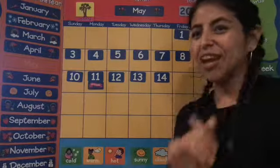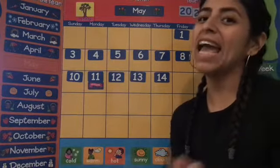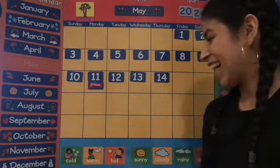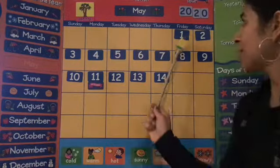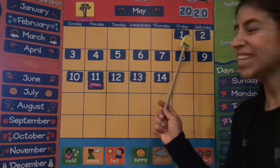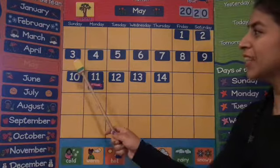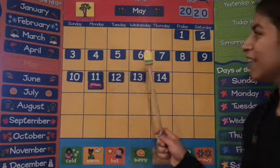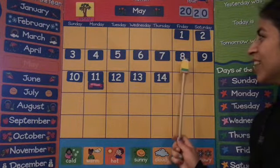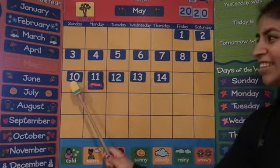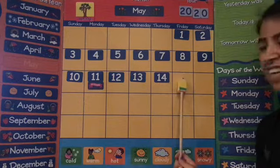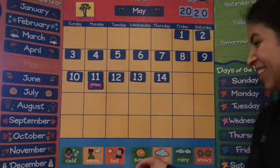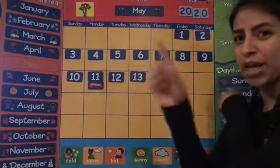Good job. So now we pointed to the months of the year and we danced to it, so I hope you enjoyed that. Now we're gonna go and find our date — we have to find our missing number. So let's begin by counting, starting at one. One, two, three, four, five, six, seven, eight, nine, ten, eleven, twelve, thirteen, fourteen, fifteen. So let's go ahead and put fifteen — a one and a five.